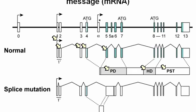If there's a mutation that affects the ability of the exons to recognize each other — so for example, maybe there's a change in this exon at the point in here — then when the cell is putting the whole thing together, it splices inappropriately and gives us a message that the cell didn't expect. We're going to see that in a little bit more detail in a moment.